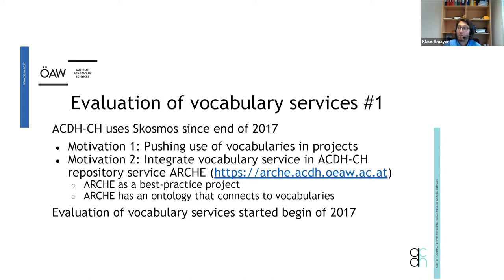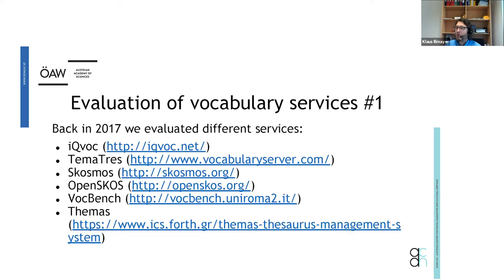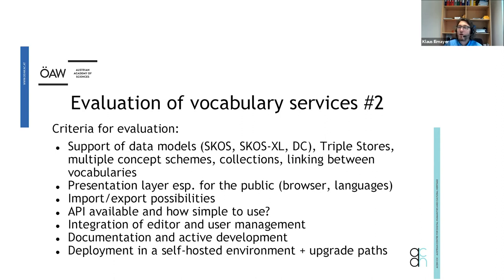We started the evaluation back in 2017. The main motivations were our repository service and the push to promote vocabulary use. Our results are based on that evaluation from around three years ago, from which we decided on SKOSMOS. The criteria included support for data models, which triple stores could be connected, and how the front-end presentation layer looked and could be adapted.